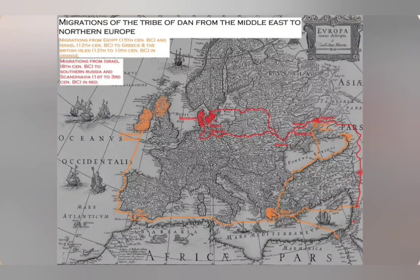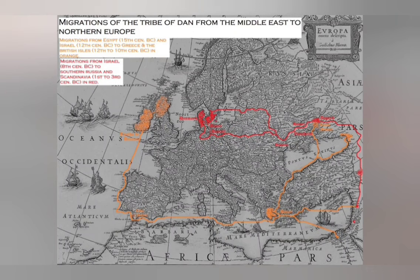Hecataeus of Abdera was a historian from Thrace in northern Greece who lived in Egypt during the 4th century BC under the Macedonian King Ptolemy I, one of Alexander the Great's generals. It is quite obvious that the Israelites whom Moses led to Canaan, and the Danae who went to Greece, were the same people — and that the Danae were in fact Israelite Danites.